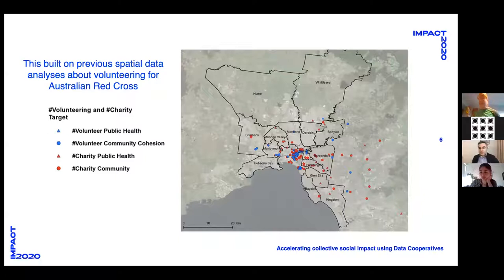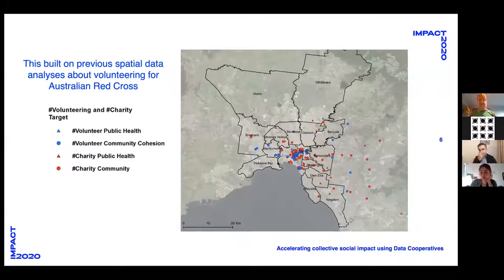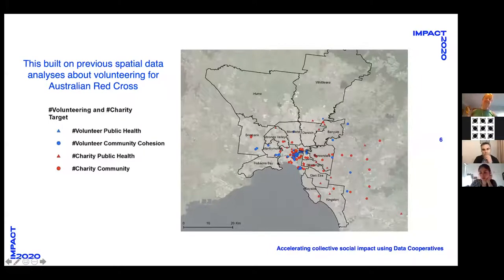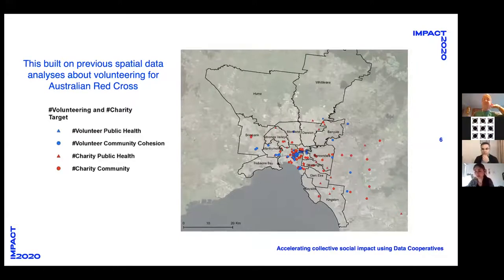I'll show you some early experiments we've had with partners using data. The first was working with the Australian Red Cross. We looked at spatial data about areas, the Red Cross's own data about volunteering and donations, and overlaid it with Instagram data about people's motivations, behaviours, and photographs of their volunteering. We were able to show gaps between people's volunteering actions and the things motivating them versus what Red Cross already knew about its volunteers, and this helped to inform the Red Cross's volunteering strategy.